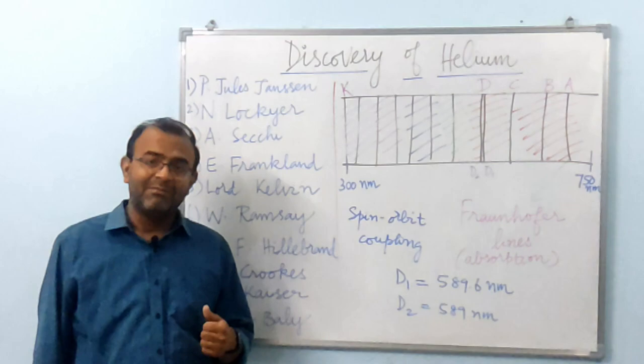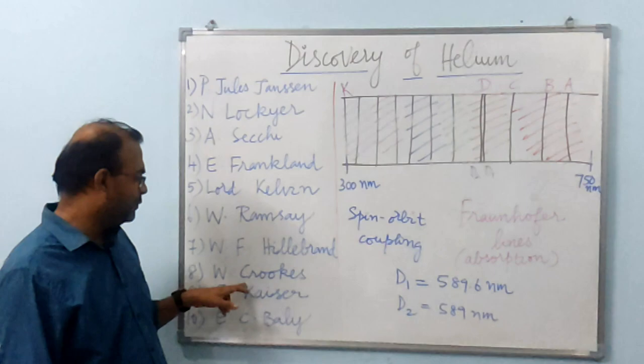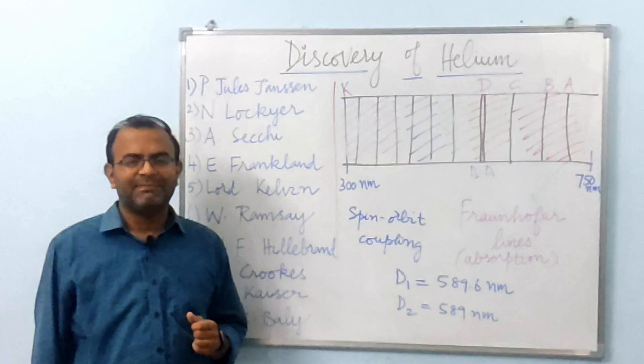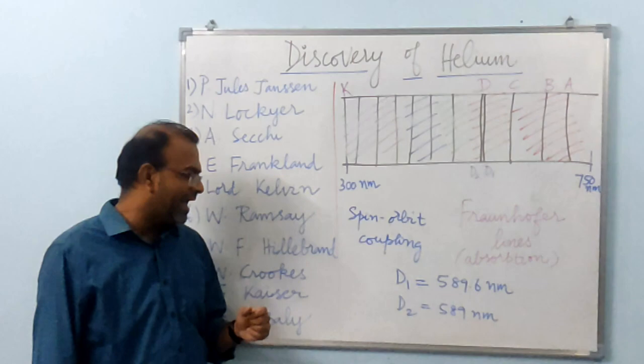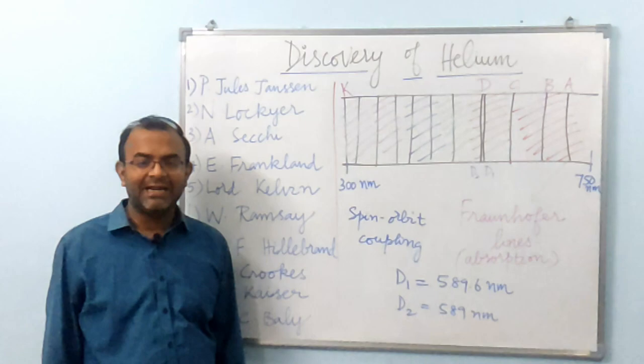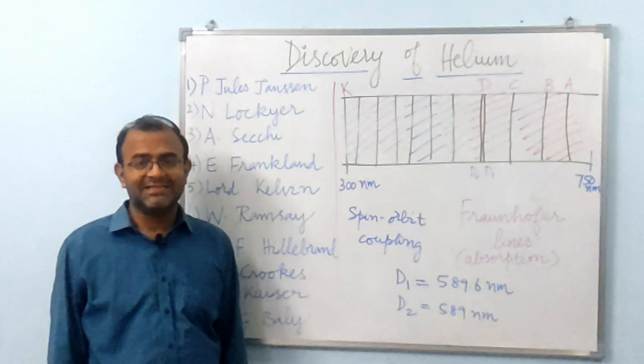So he sent the spectrum to Crookes for analysis and William Crookes systematically analyzed the spectrum and found that the D3 line was present in that spectrum as well. William Crookes measured the wavelength of this line and confirmed that it is the same as the D3 line, thereby proving the terrestrial existence of Helium.